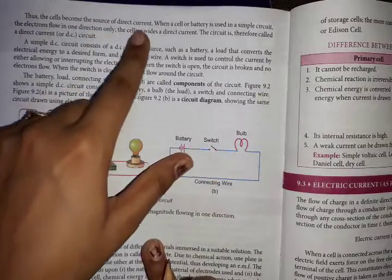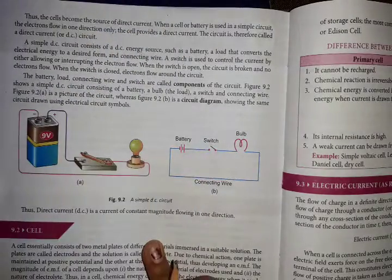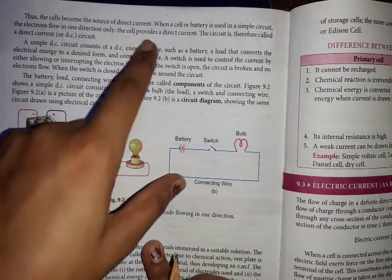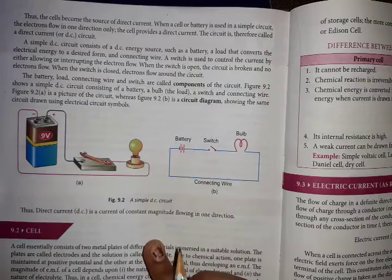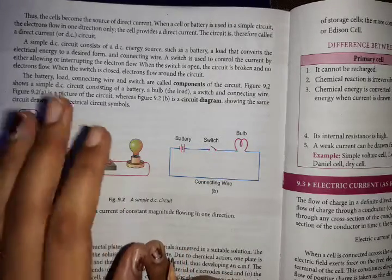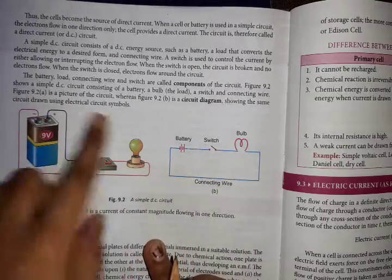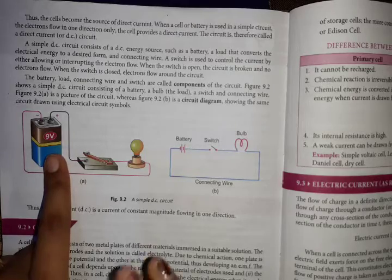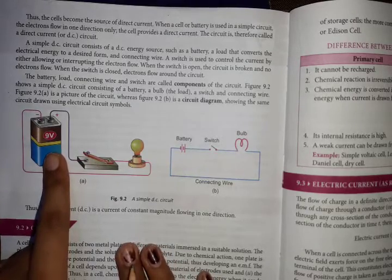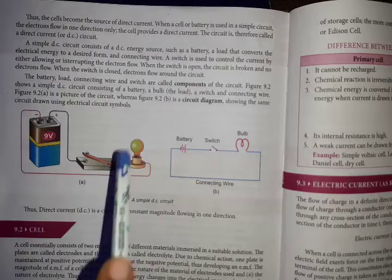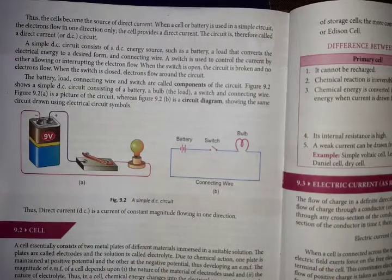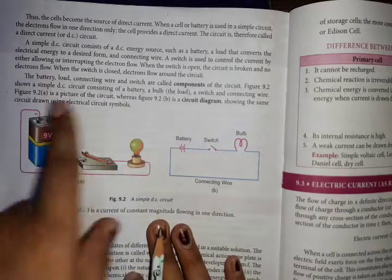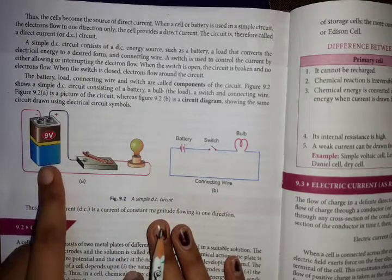A cell becomes the source of direct current when it is used in a simple circuit. Electrons flow in one direction only — the cell provides direct current. This circuit is called the direct current circuit. When we put this setup with a battery or cell, current moves in one direction only.